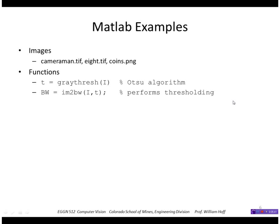In MATLAB the Otsu algorithm is this function called graythresh. It returns a threshold t. You can use that to threshold an image using i greater than t or there is a function called im2bw. Let me show that in MATLAB.